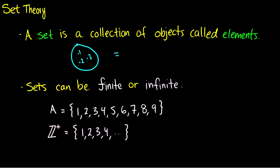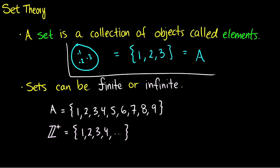And we can write this formally in curly braces, writing all of the elements inside. So in this case our set contains one, two, and three, and we can give this a label and maybe call this A. These are all different ways of representing the same thing. A is the set {1, 2, 3}, which looks like a circle containing elements one, two, and three. This notation in curly braces is called list notation because you're listing them all.